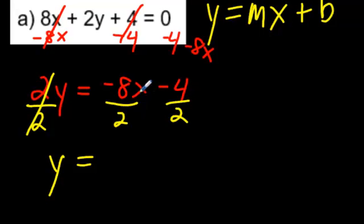Negative 8x divided by 2. Well, remember, a negative divided by a positive is a negative. So we have negative 4. 8 divided by 2 is 4. And don't forget the x.